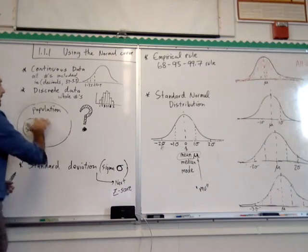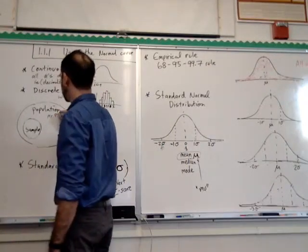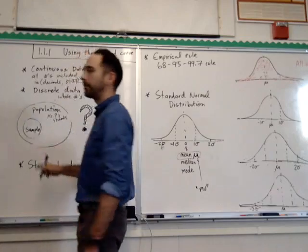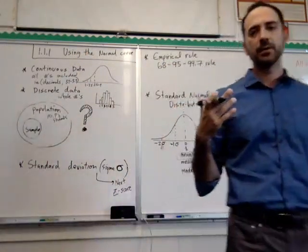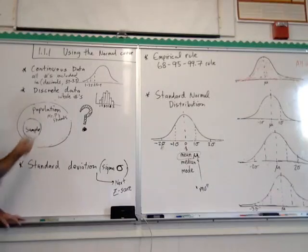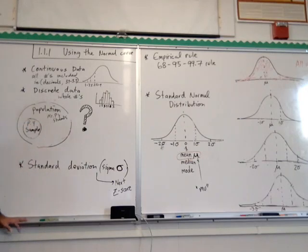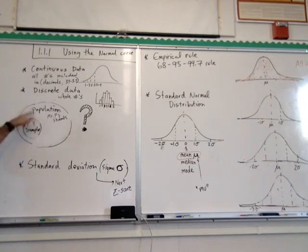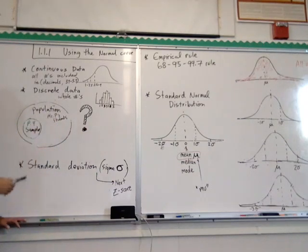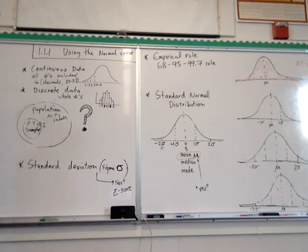Next we have population and sample. Think of population as all my students in all my classes — all of Mr. P's students. The sample really has to reflect the population, so you want to make sure your sample has some of the qualities the population does. A sample from a population of my students would be, for example, period four students — all 35 students in there. If I also included period one, the honors class, that would better reflect qualities of all my students.